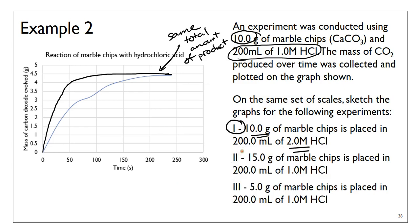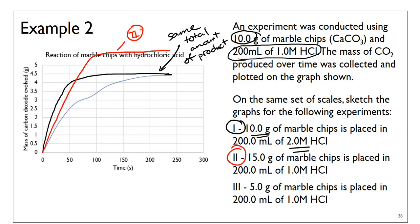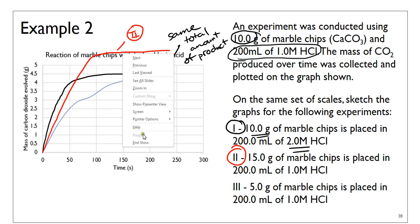For number two, we use 15 grams of marble chips with the same concentration of hydrochloric acid. Since marble chips were the limiting reagent, increasing the amount of marble chips means you get a faster reaction and also more product. So number two's graph must reach a higher plateau than the original, and it should have a faster initial slope than number one — though the exact comparison in speed between one and two is difficult to determine precisely.